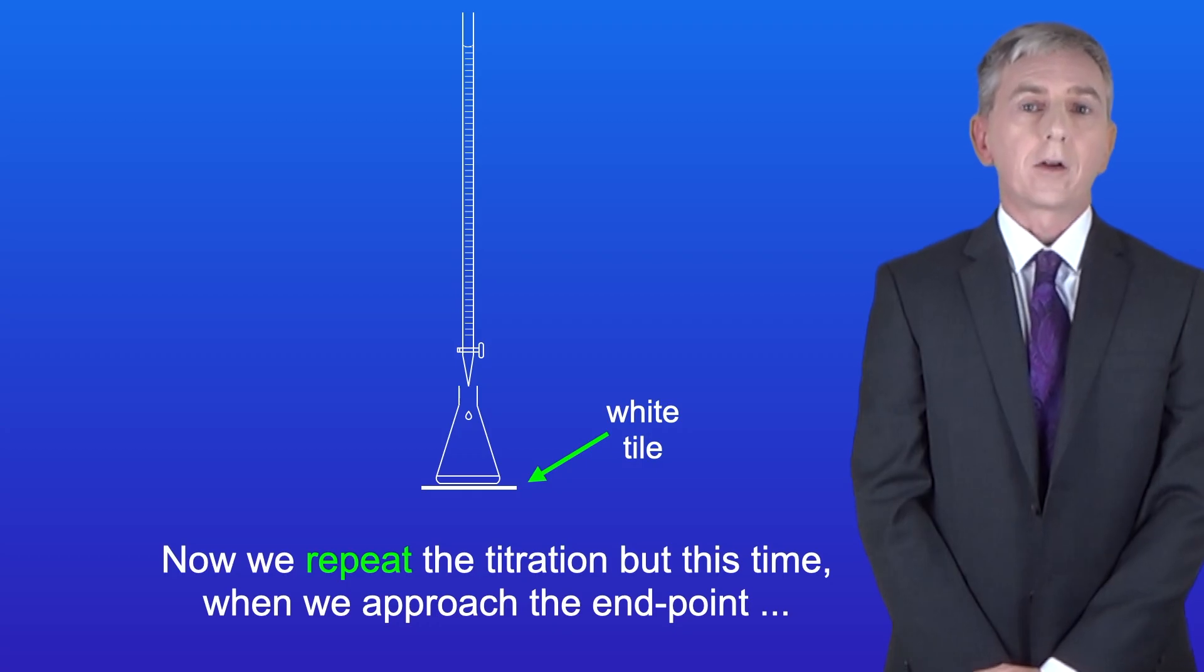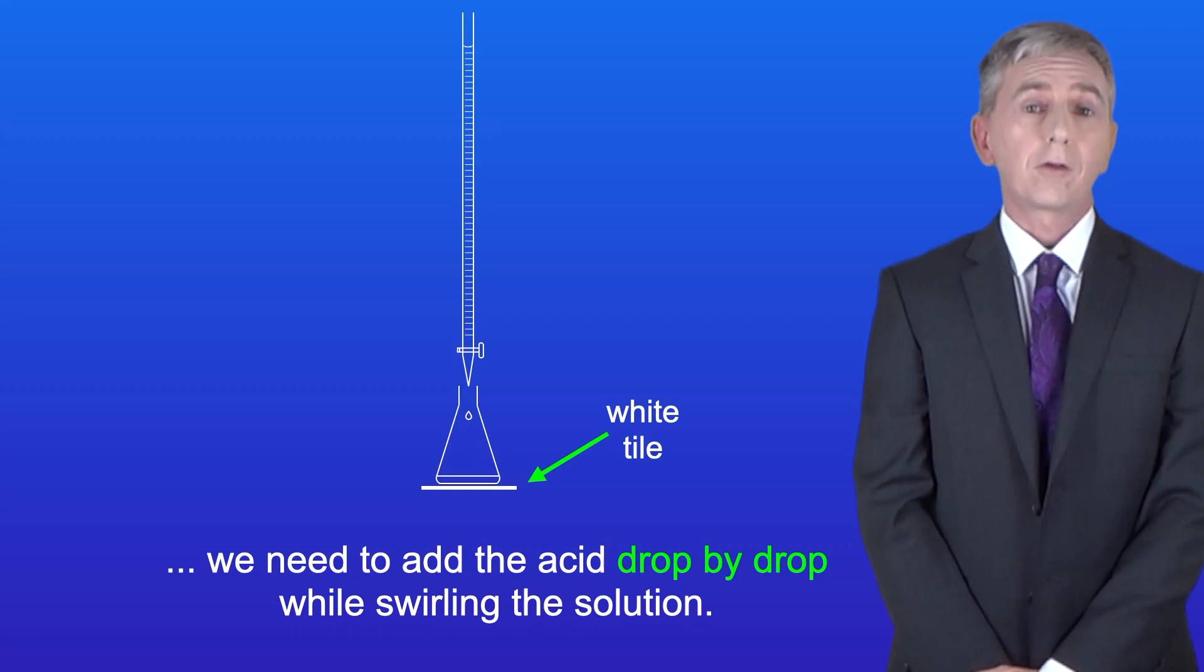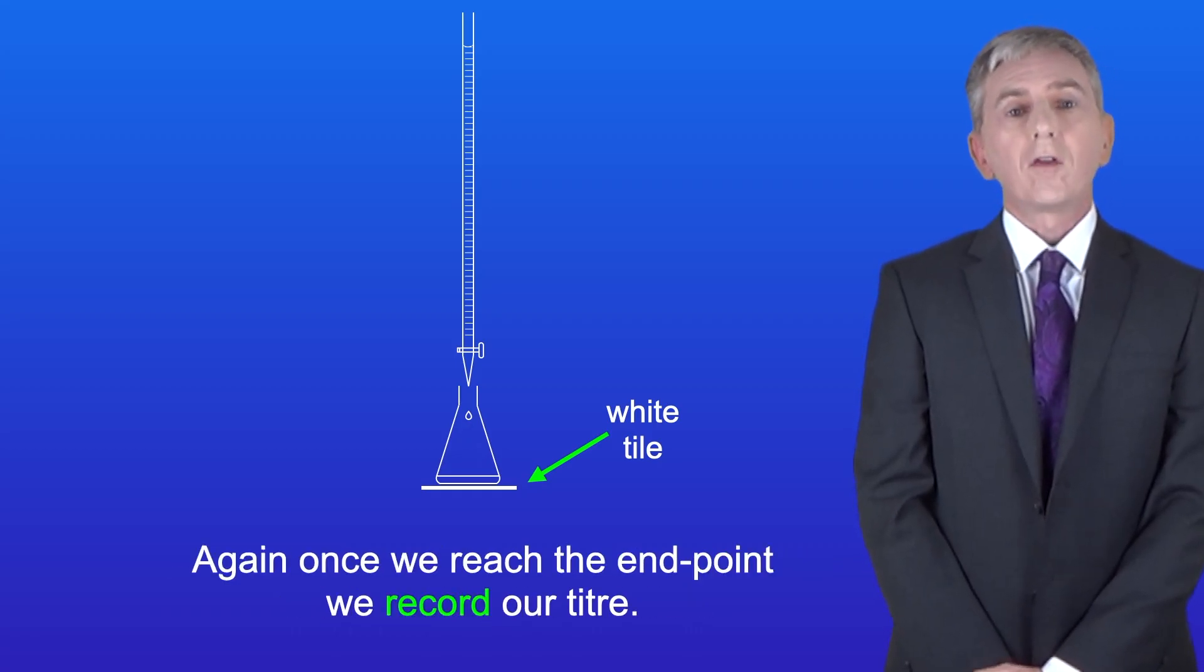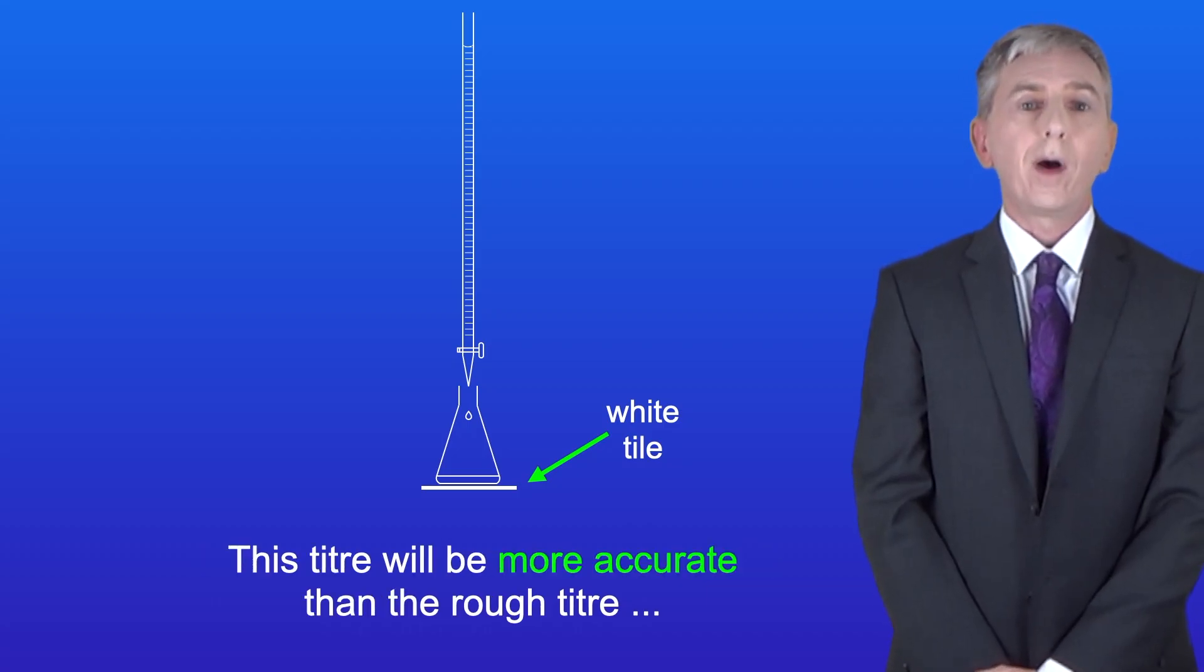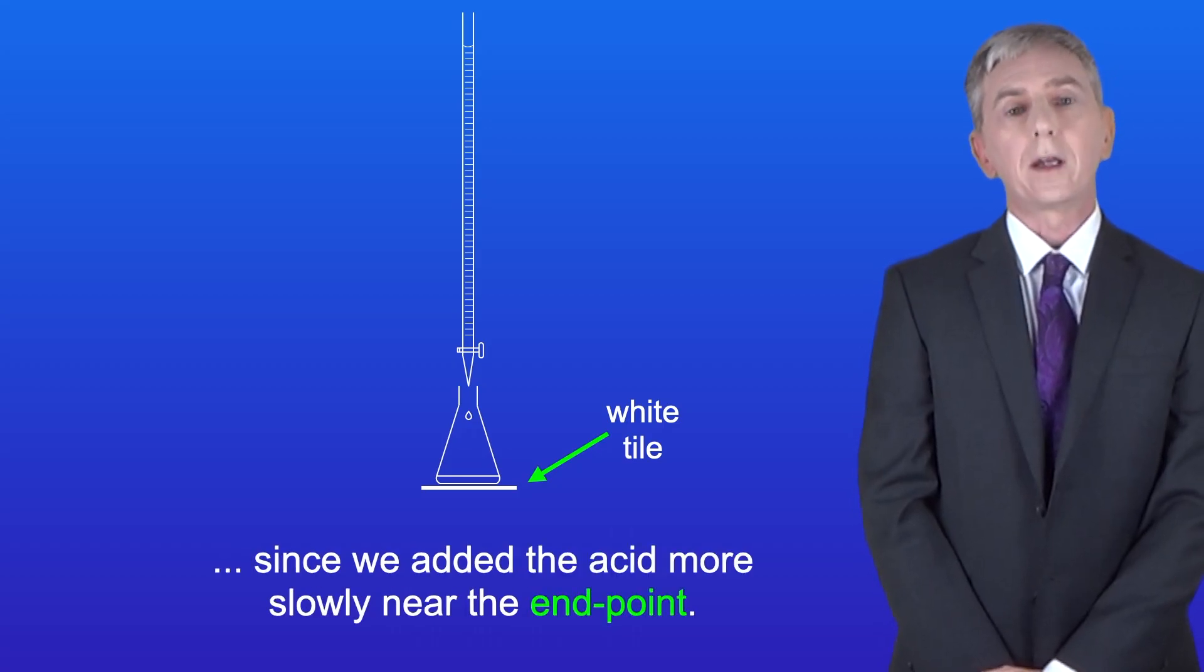Now we repeat the titration, but this time when we approach the end point, we need to add the acid drop by drop while swirling the solution. Again, once we reach the end point, we record our titer. This titer will be more accurate than the rough titer, since we added the acid more slowly near the end point.